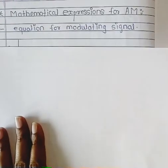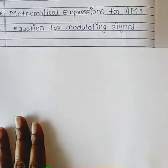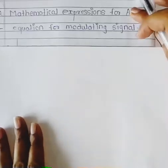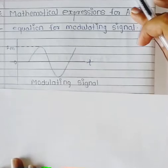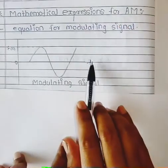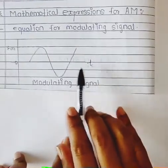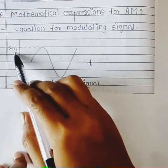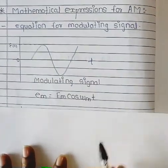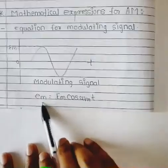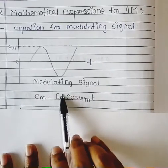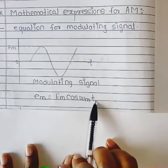First, we find out the equation for the modulating signal. This is the modulating signal — on the x-axis there is time, and on the y-axis that is e_m, the modulating signal. The equation for the modulating signal for amplitude modulation will be: small e_m is equal to capital E_m cos(ω_m t). This is the standard equation.